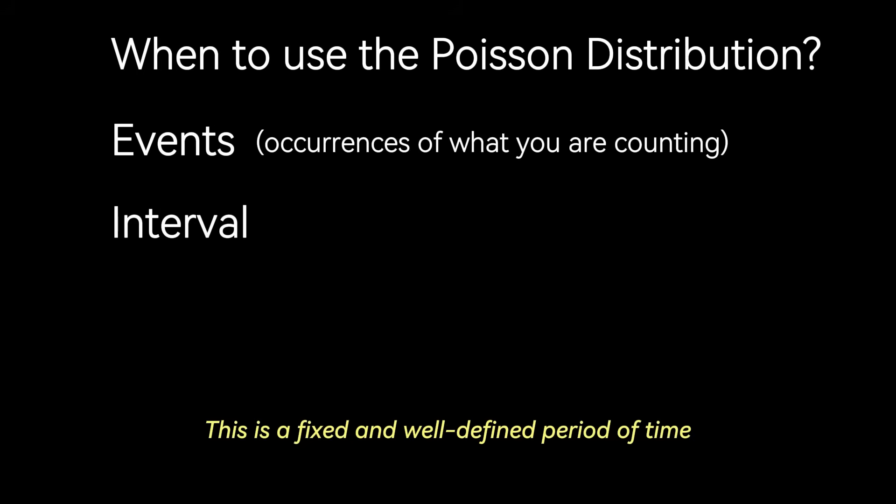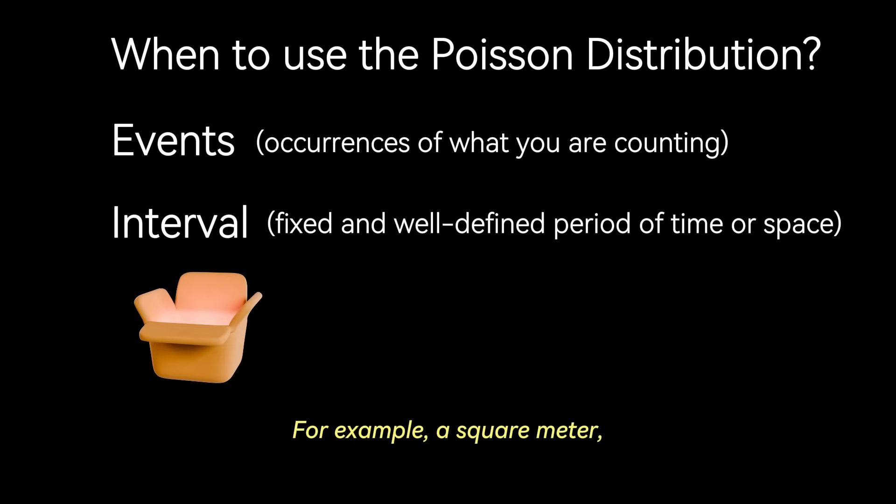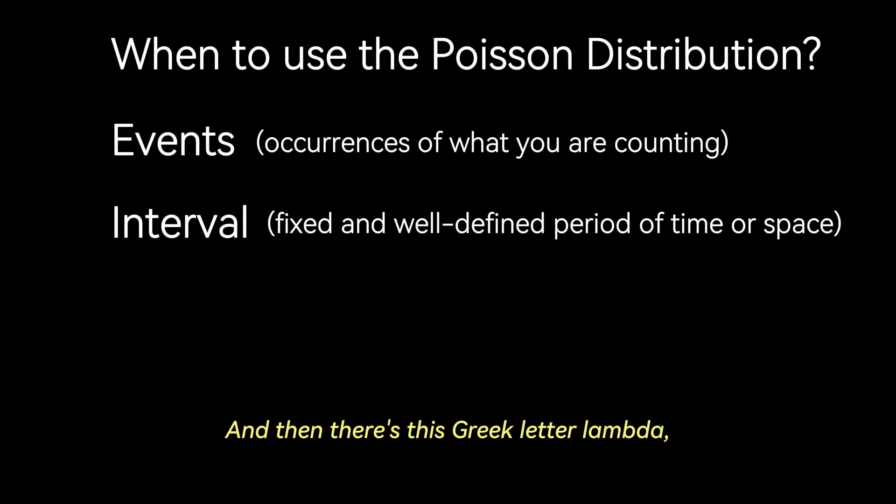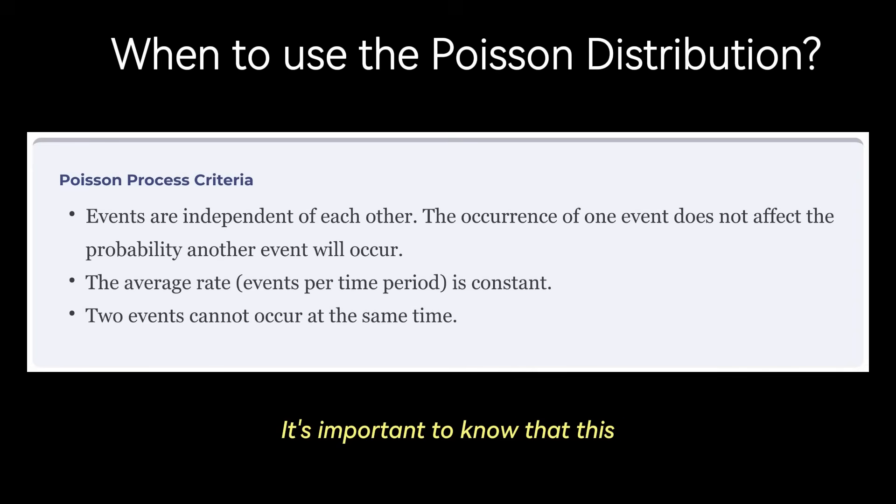Next is the interval. This is a fixed and well-defined period of time, for example an hour, day, or month, or a region of space. For example, a square meter, a liter of liquid, or a page of text. And then there's this Greek letter lambda, which is the known constant average rate. You need to know or be able to estimate the average number of times an event occurs within that specific interval. It's important to note that this rate is assumed to be constant throughout the interval.